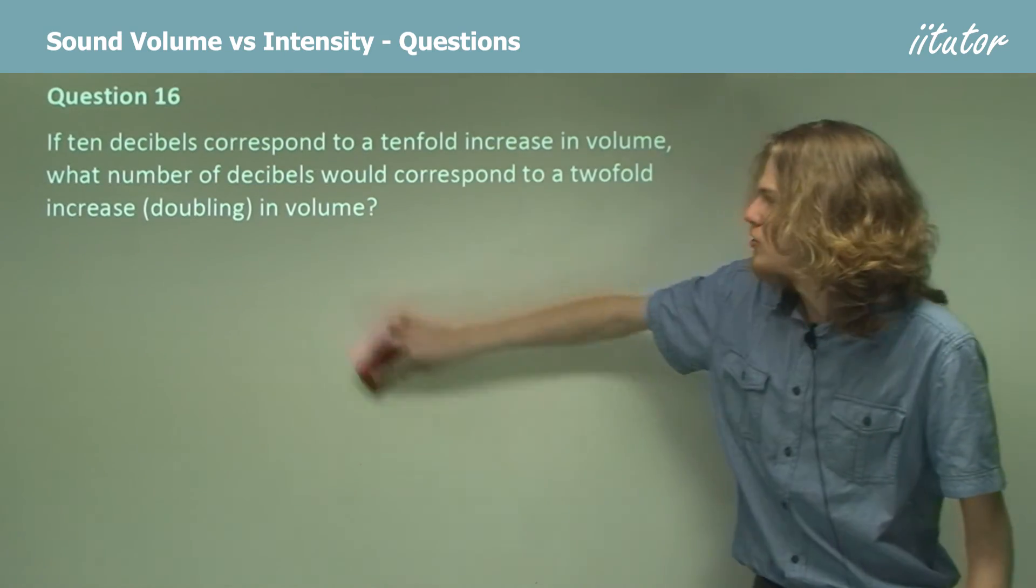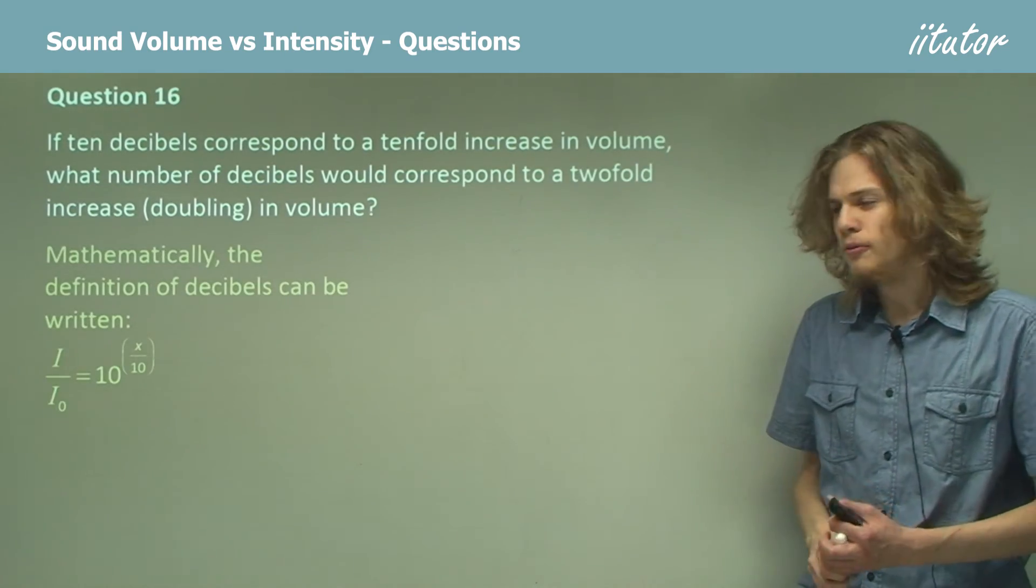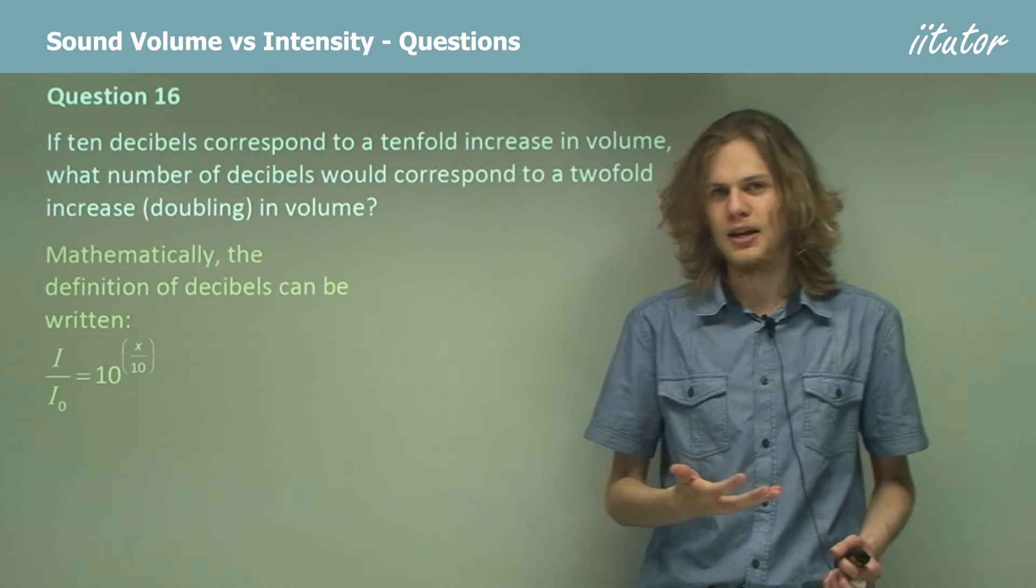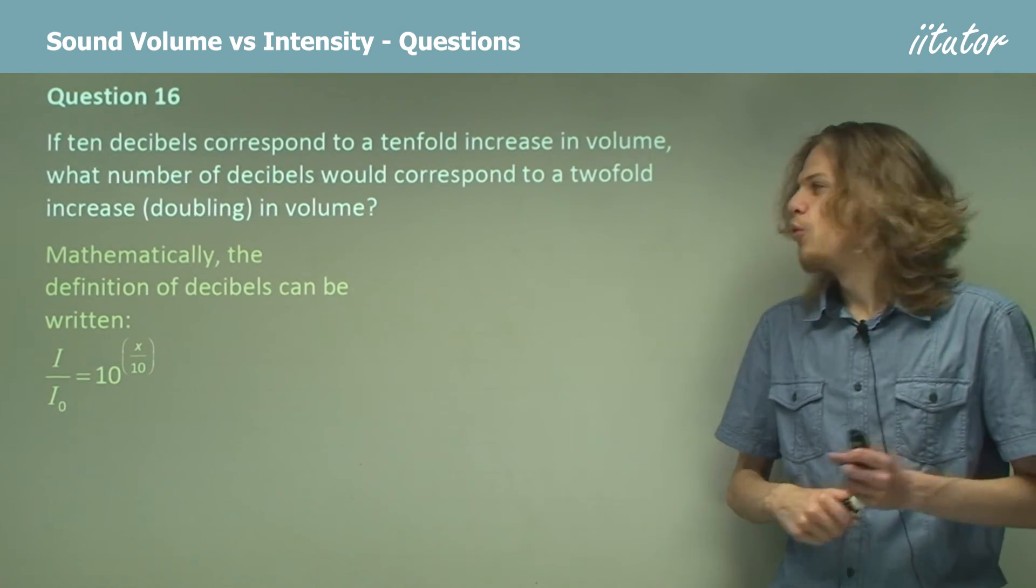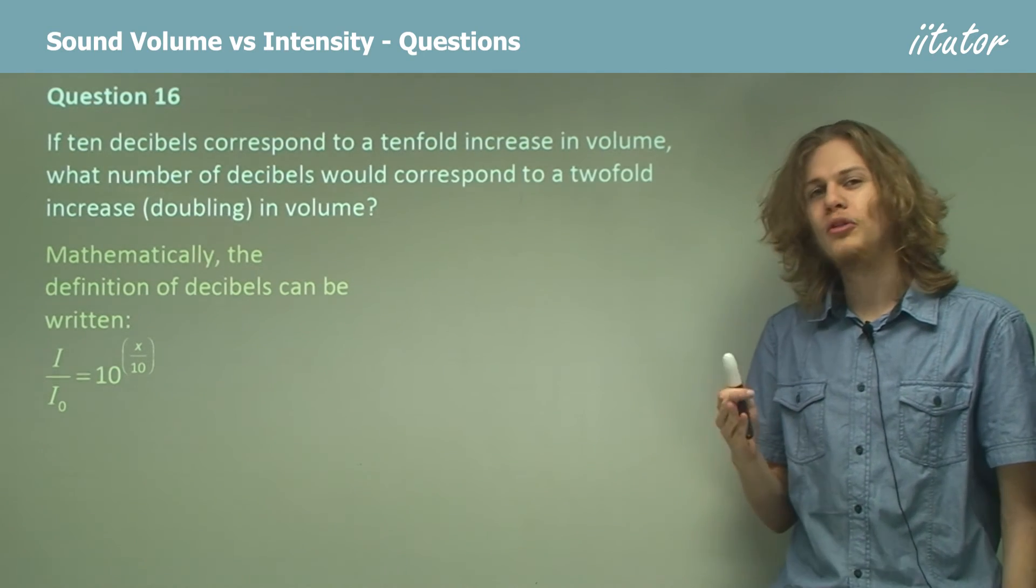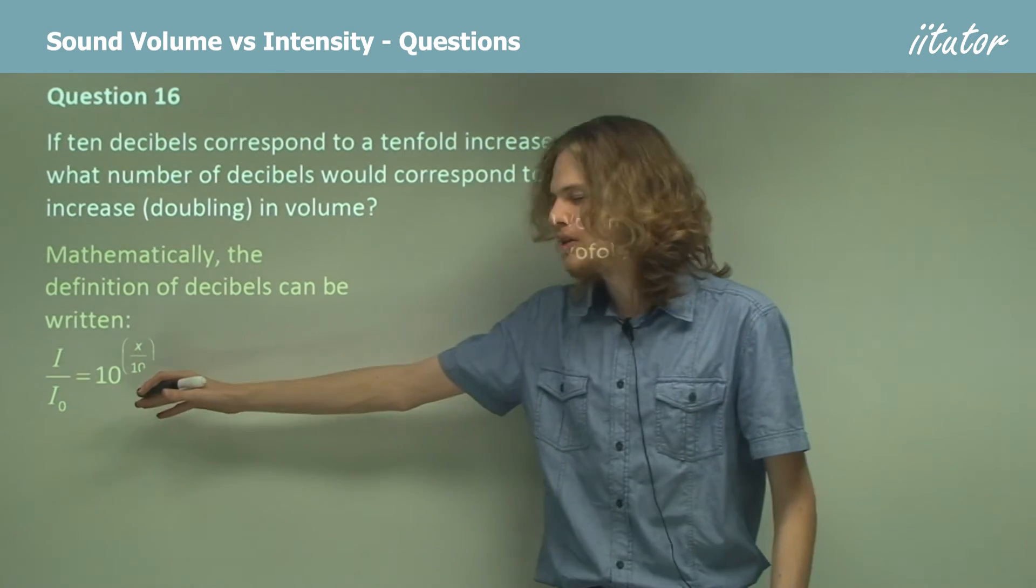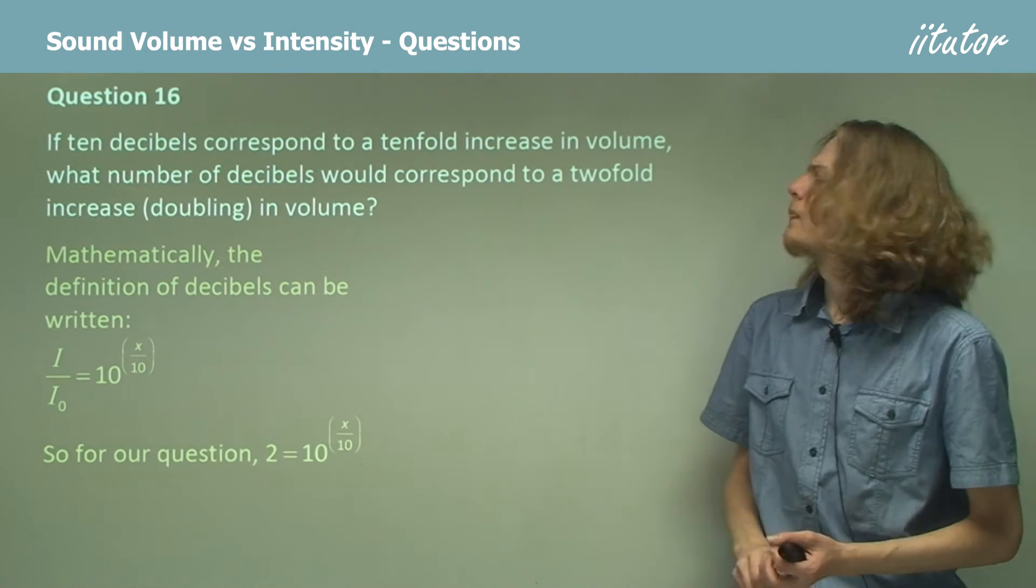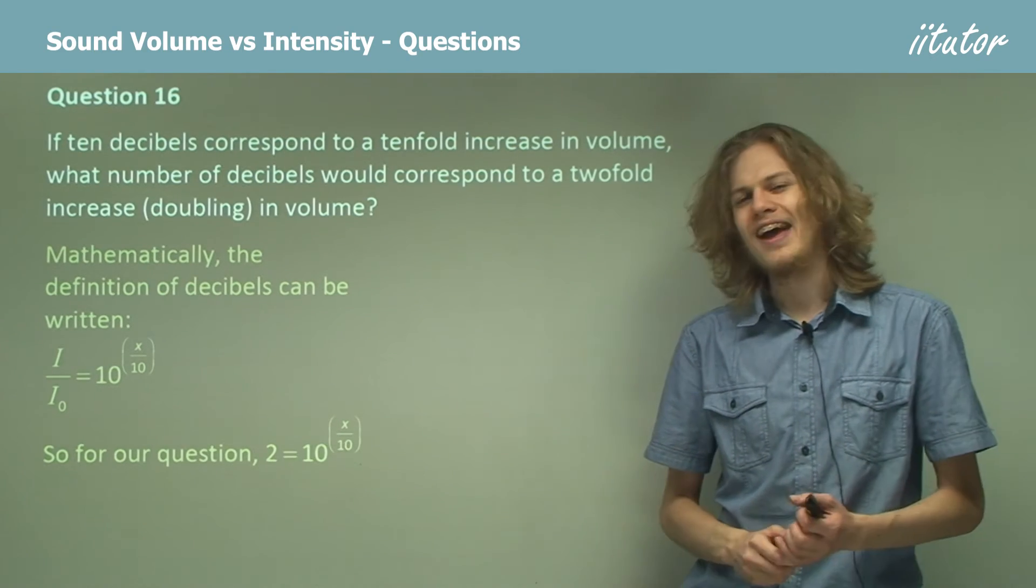So in general, we can write down this equation. I over I0 equals 10 to the power of x over 10. Now, what if we want an increase of 2, or a factor of 2, so that we double the intensity? That means the left side of the equation will be 2. So 2 equals 10 to the power of x over 10.